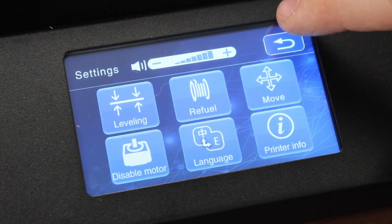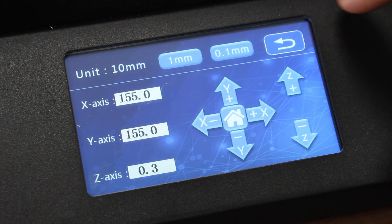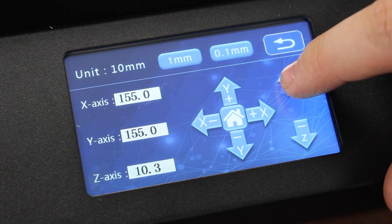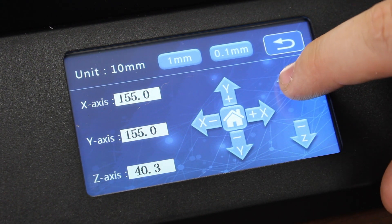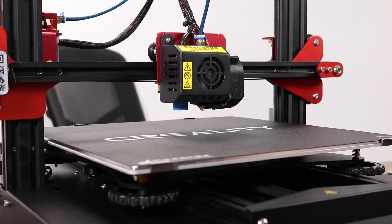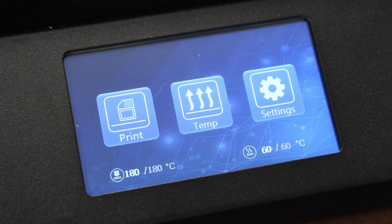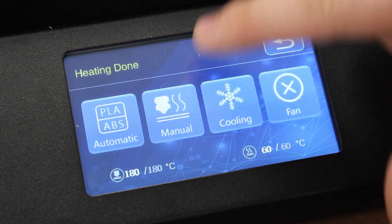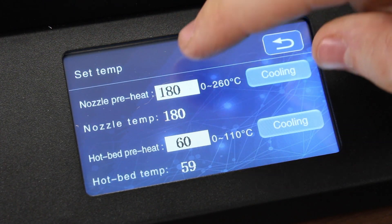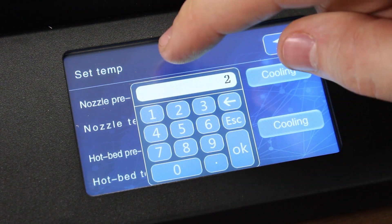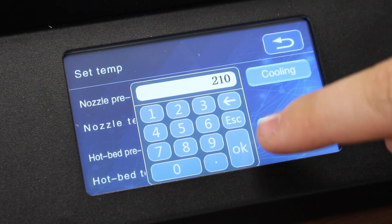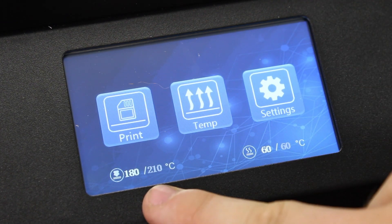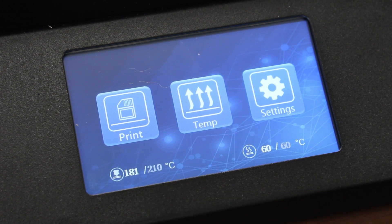Now it's time to load the filament. Go to the Move menu and then raise the Z axis. Here we're going to raise it to about 60mm. After raising the axis, it's time to raise our temperatures for the hotend. Go to Temp, Manual, and then raise the temperature to about 210 for PLA. You should watch the temperature rise up to 210.